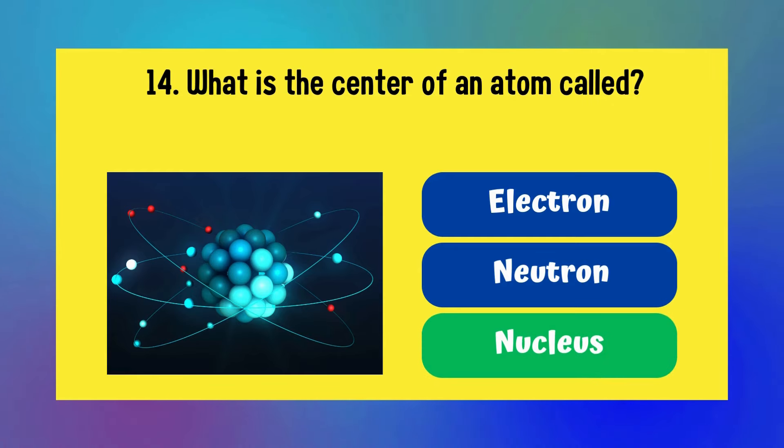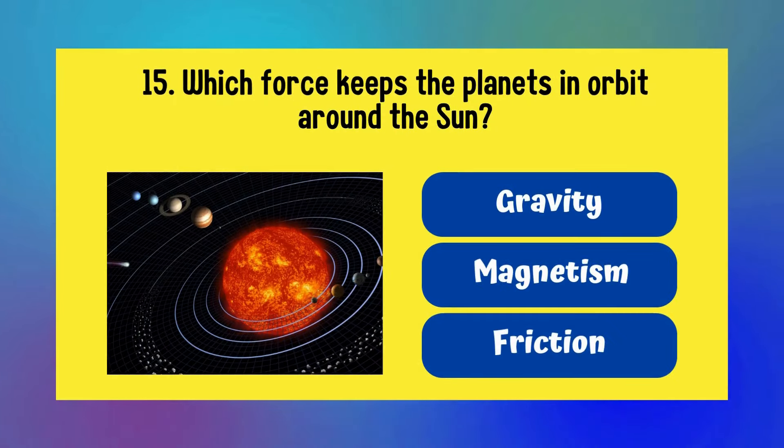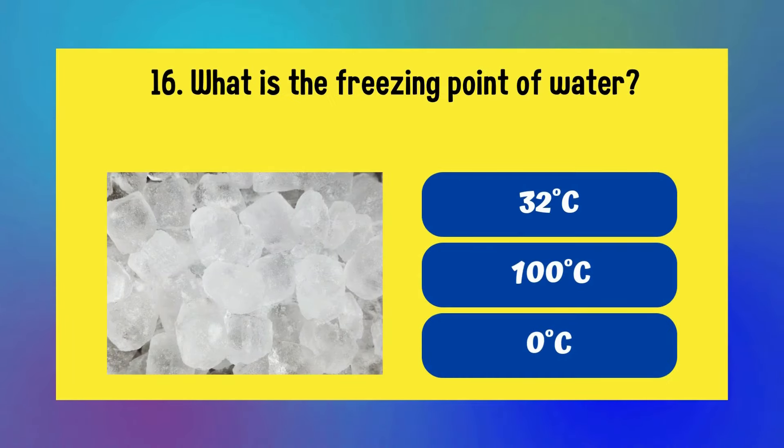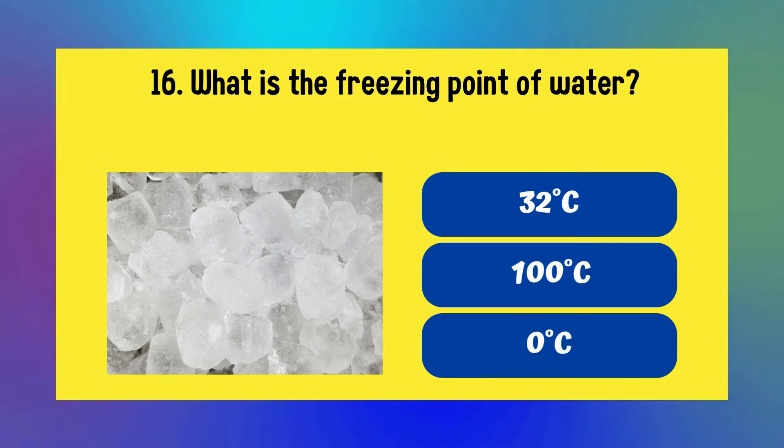What is the center of an atom called? Electron, neutron, or nucleus? Answer is nucleus. Which force keeps the planets in orbit around the Sun? Gravity, magnetism, or friction? Answer is gravity. What is the freezing point of water? 32 degrees Celsius, 100 degrees Celsius, or 0 degrees Celsius?